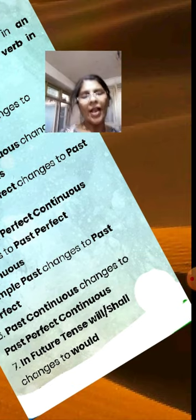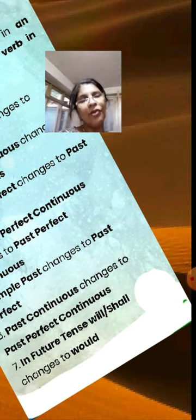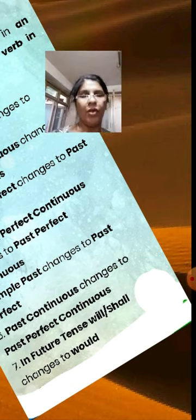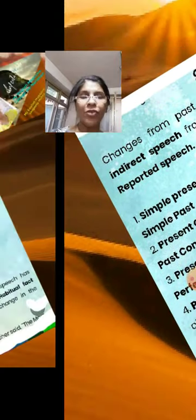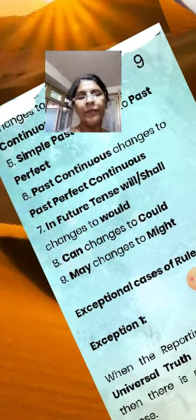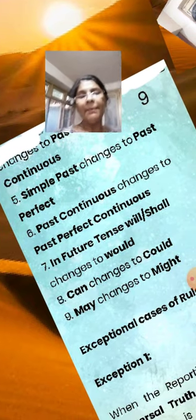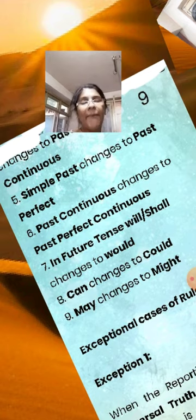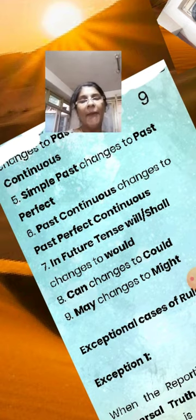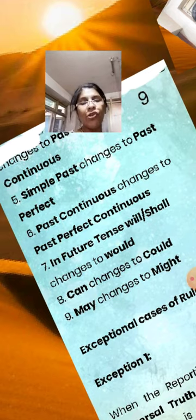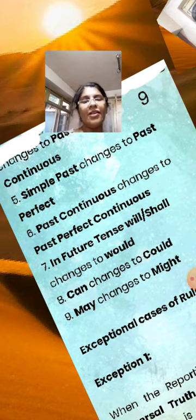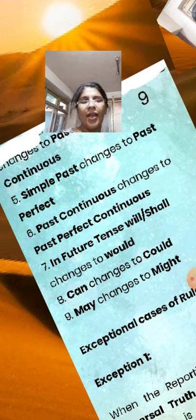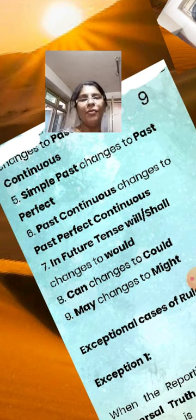In future tense, will and shall change to would. Can changes to could. May changes to might. This is the rule.